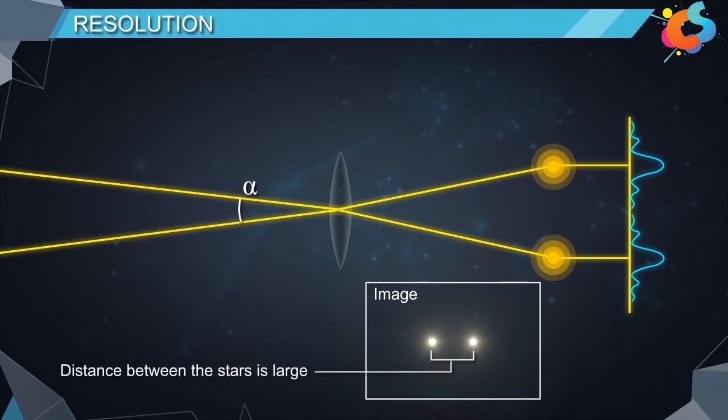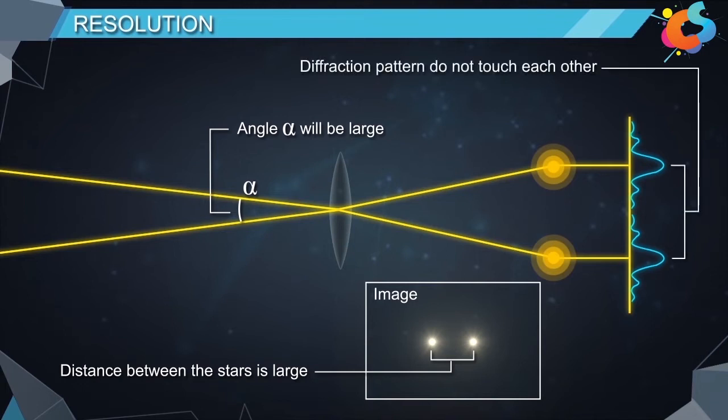Since the distance between the stars is large, angle alpha will be large and diffraction patterns do not touch each other. Hence the images of the stars can be seen as separate images.